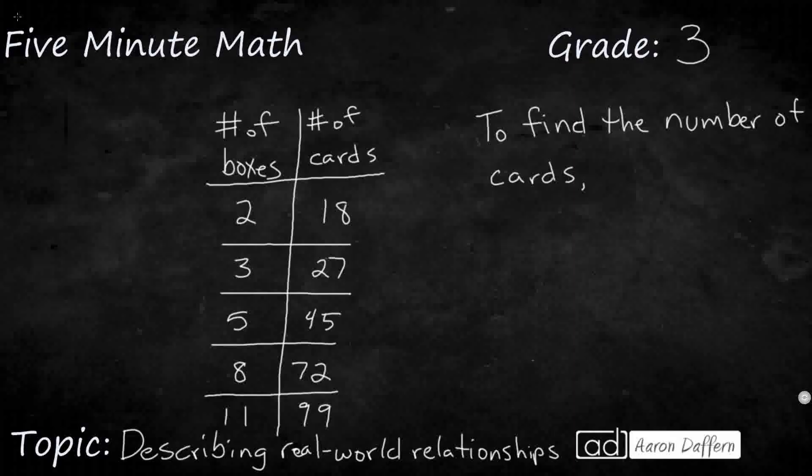So we have a basic input-output table here, and we see the relationship. We've got the number of boxes in the left-hand column, and the number of cards in the right-hand column. What we're used to is writing the rule as either a plus something or a multiply by something. But sometimes we need to be able to describe that relationship in words rather than just writing the rule. So let's figure out what this relationship is, and then we can figure out how to best describe it.